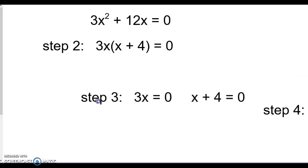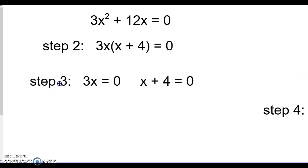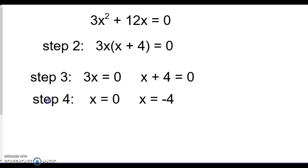Then after you factored it, step three: set each factor equal to zero. So that 3x in front could be zero, or what's in the parentheses could be zero. Then you solve each. We're going to divide this equation here by three—zero divided by three is zero. For the second equation, you subtract four, so you get negative four.